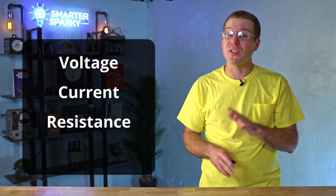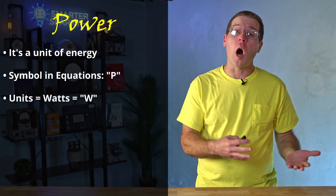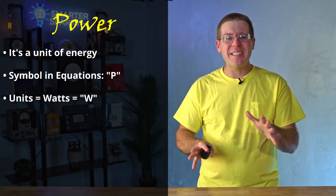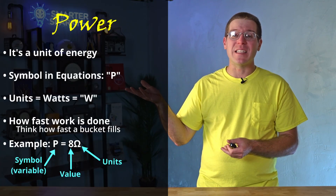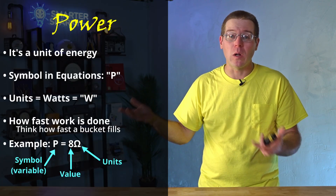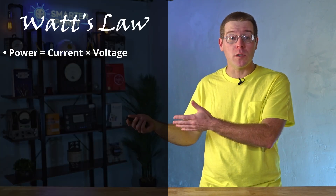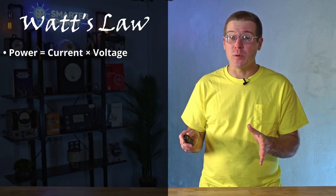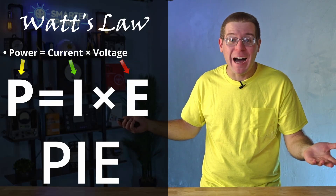We've talked about the three items that can be measured for Ohm's Law — voltage, current, and resistance. There's actually a fourth item as well, and that's power. Power is a unit of energy — we symbolize it using the letter P and it's measured in watts (W). Basically, power is the rate at which electrical work is performed. For example, a 60-watt light bulb does less work than a 100-watt light bulb — it puts out less light and less heat. Watt's Law states that power equals current times voltage, or amps times volts. This formula is easy to remember because the variables spell out pi: P equals I times E.